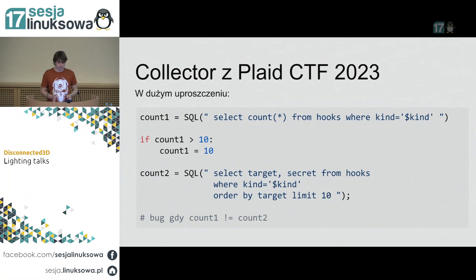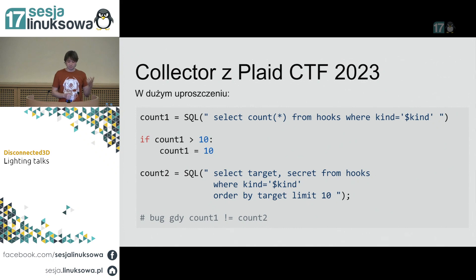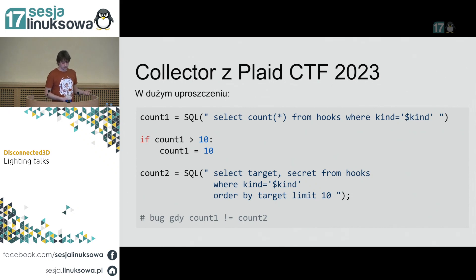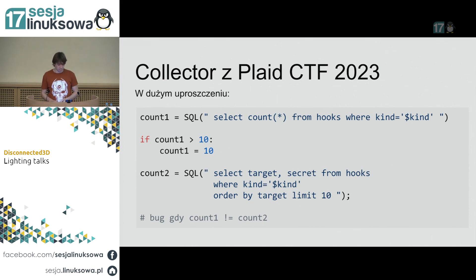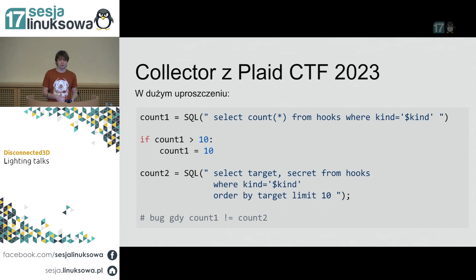Aplikacja w C robiła w dużym uproszczeniu coś takiego: wykonywała pierwszego selecta – `SELECT COUNT(*) FROM hooks WHERE kind = [nasz kind]`. Następnie ten count, jeżeli był większy od 10, był zmieniany na 10 – maksymalna liczba. Potem było drugie query SQL, które dostawało ten sam kind, pobierało pola target i secret z tabeli hooks, orderowało po target i limitowało do 10. Błąd w aplikacji występował tylko wtedy, kiedy te dwa liczniki były różne.